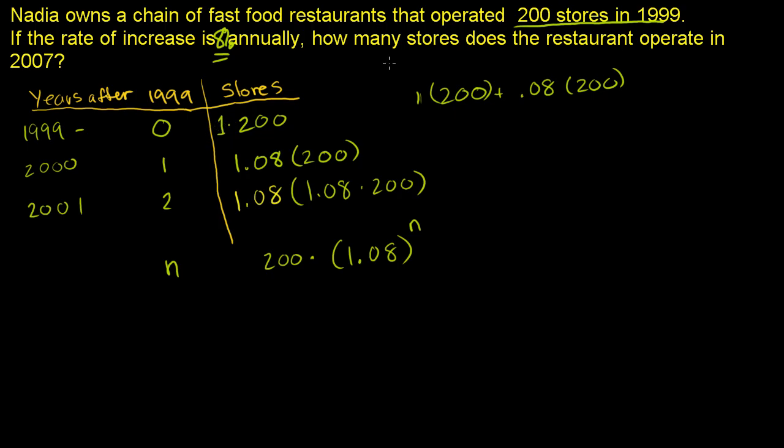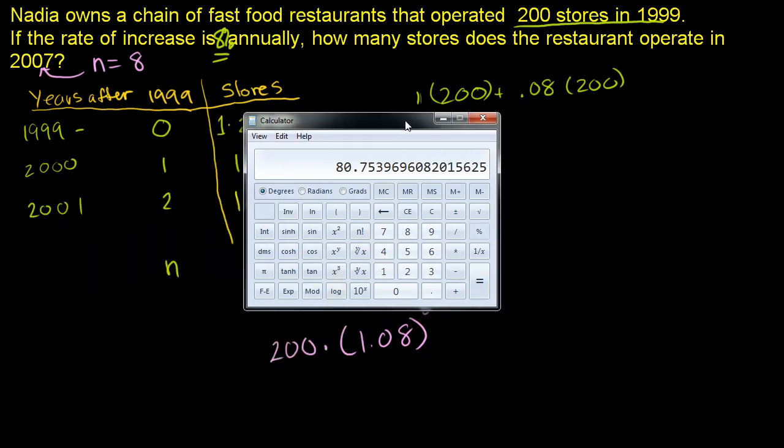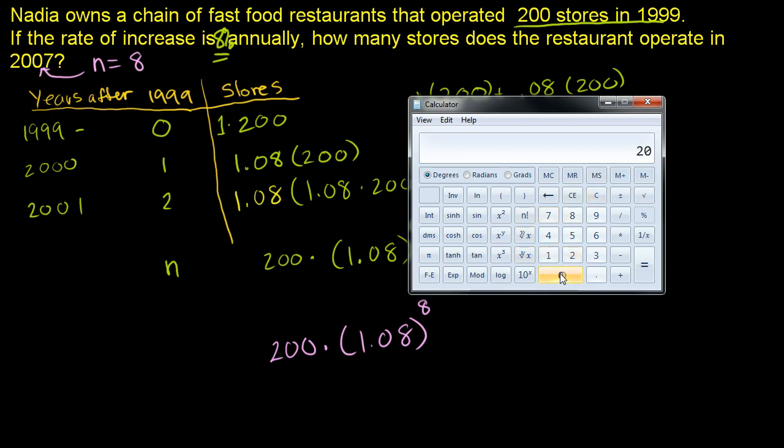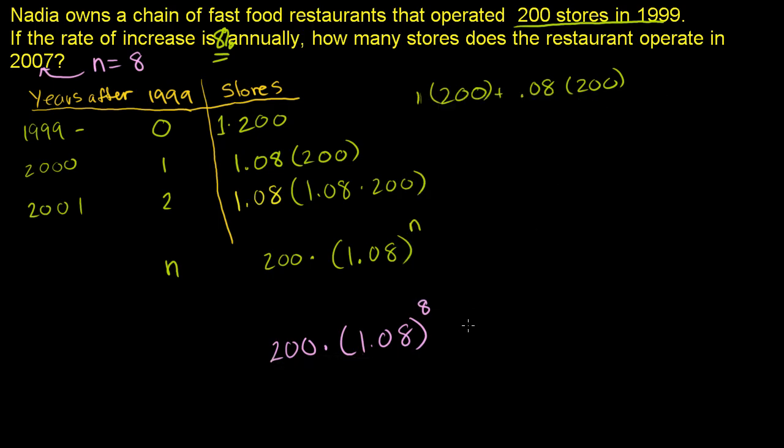So they're asking us, how many stores does the restaurant operate in 2007? Well, 2007 is 8 years after 1999. So here, n is equal to 8. So let us substitute n is equal to 8. The answer to our question will be 200 times 1.08 to the 8th power. Let's get our calculator out and calculate it. So we want to figure out 200 times 1.08 to the 8th power. She's going to be operating 370 restaurants and she'll be in the process of opening a few more. So she's going to be, if we round it down, she's going to be operating 370 restaurants.